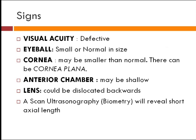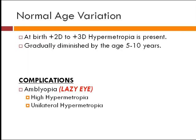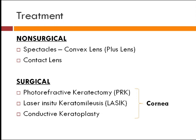When you examine the patient, visual acuity is decreased. The eyeball may be small or normal in size. The cornea may be smaller than normal; if the cornea is flat and its power is less than 40 diopters it may be labeled as cornea plana. The anterior chamber may be shallow in case of smaller axial length, and the lens can be dislocated backwards. For investigation, A-scan ultrasonography is used to check axial length of the eyeball and may reveal a short axial length. A complication known as amblyopia — also known as lazy eye — can develop, usually in high or unilateral hypermetropia.